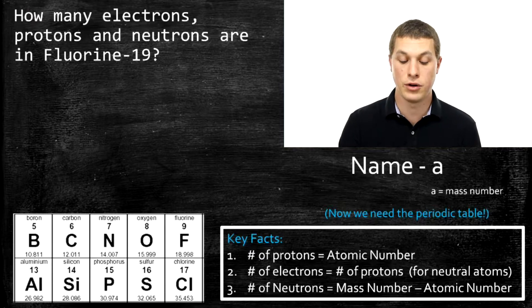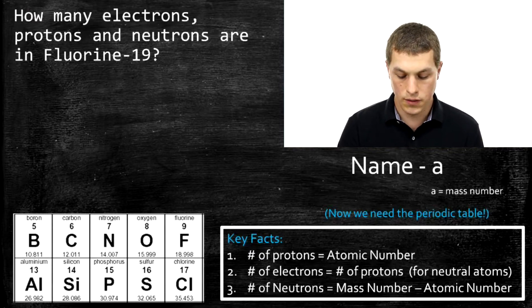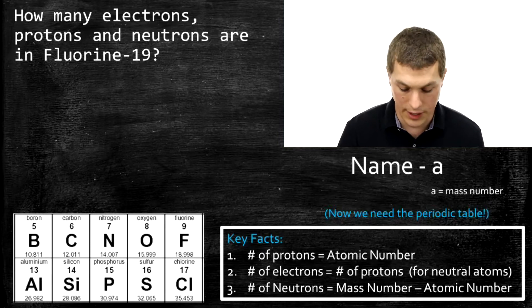Say we have Fluorine-19, and I want to know how many protons, neutrons, and electrons. The only difference now is we need to look at the periodic table to figure out how many protons fluorine has.